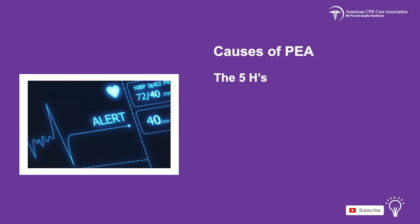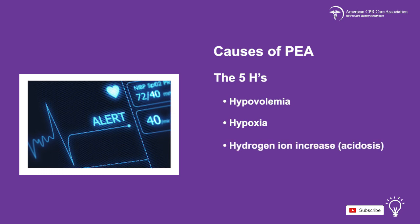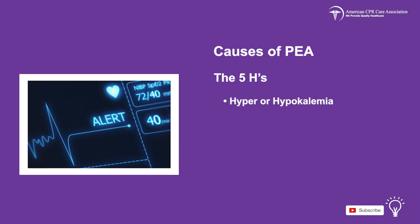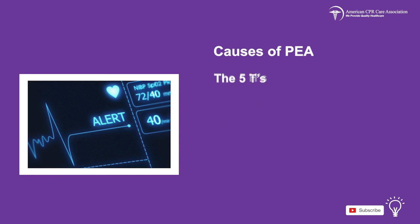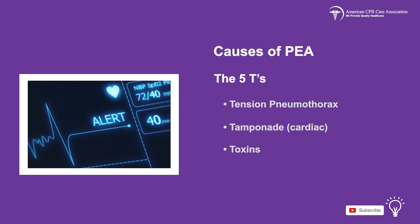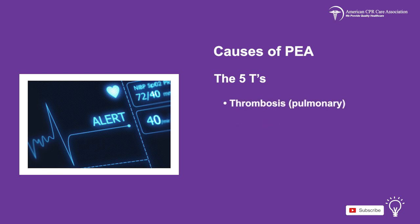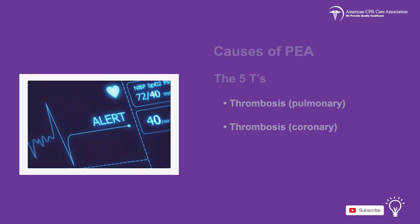The five H's are hypovolemia, hypoxia, hydrogen ion increase known as acidosis, hyper or hypokalemia, and hypothermia. The five T's are tension pneumothorax, cardiac tamponade, toxins, pulmonary thrombosis, and coronary thrombosis.